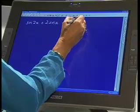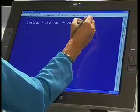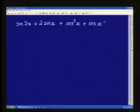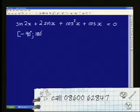Give me your question, love. It says sin 2x plus 2 sin x, plus cos squared x, plus cos x, is equal to 0. Alright, and what do they want you to do with it? I must solve for x between the interval minus 90 and 180. Okay, alright.